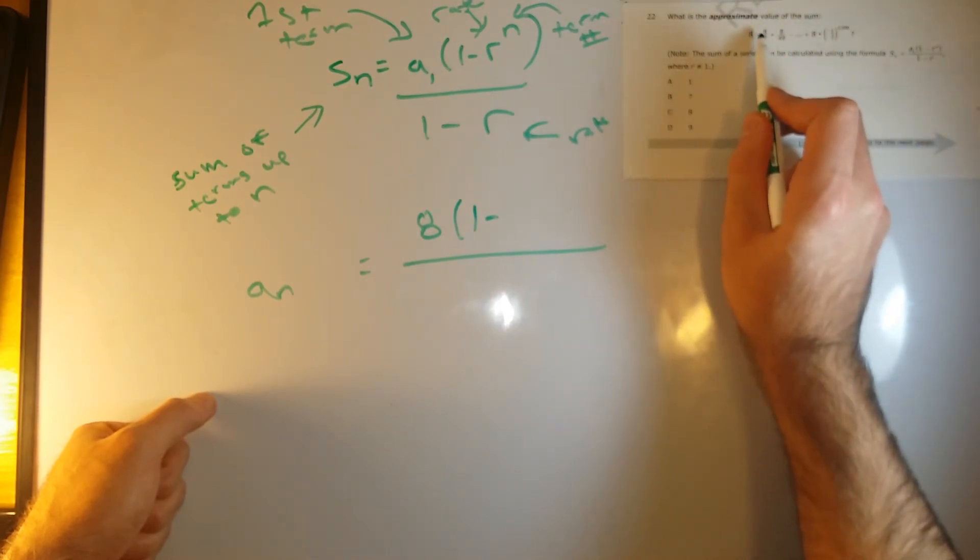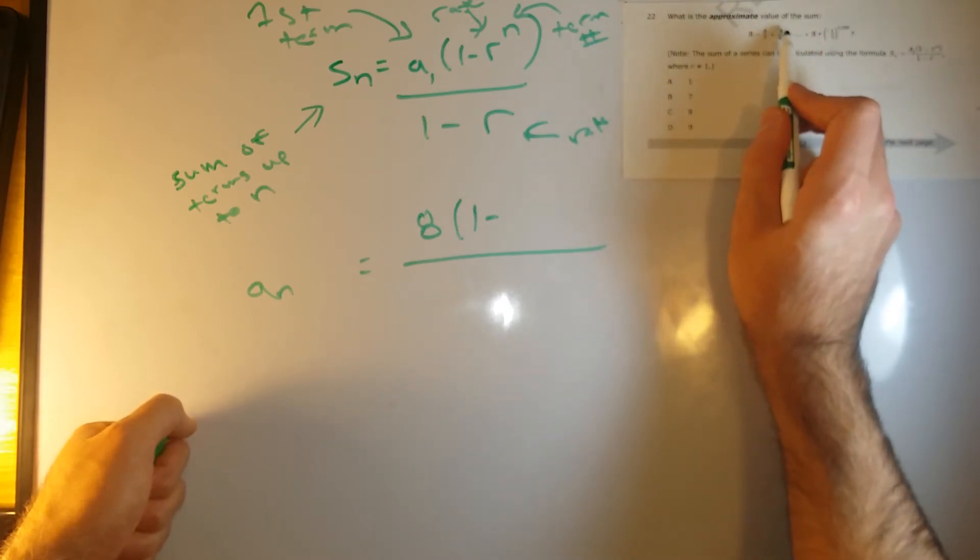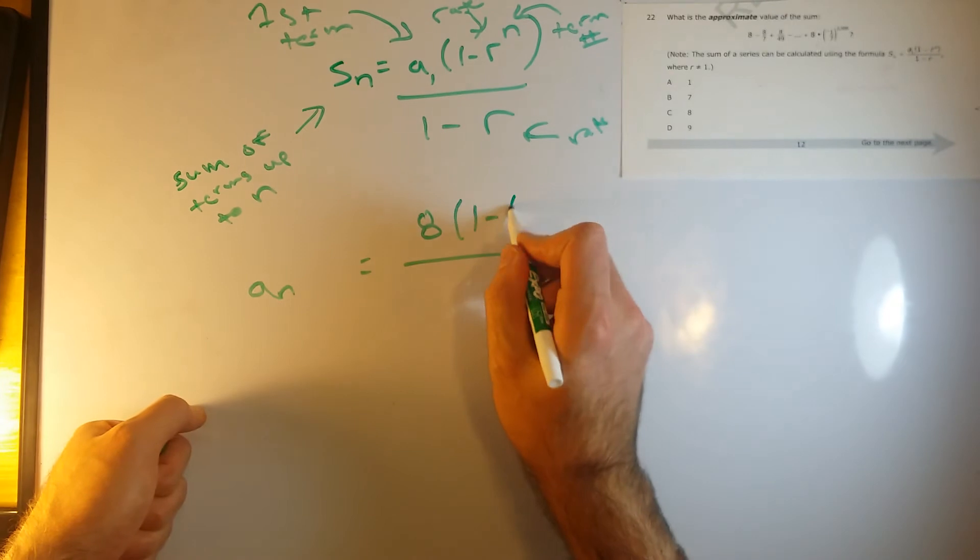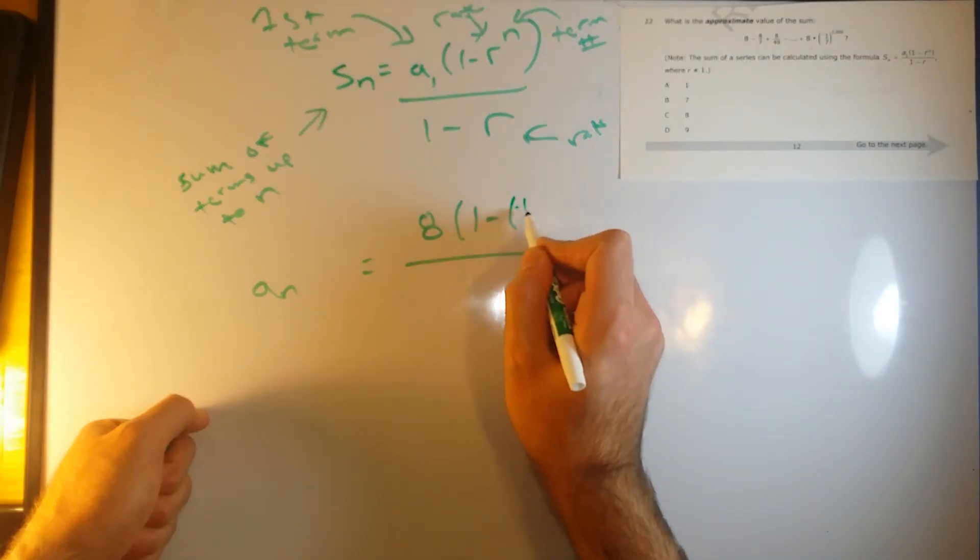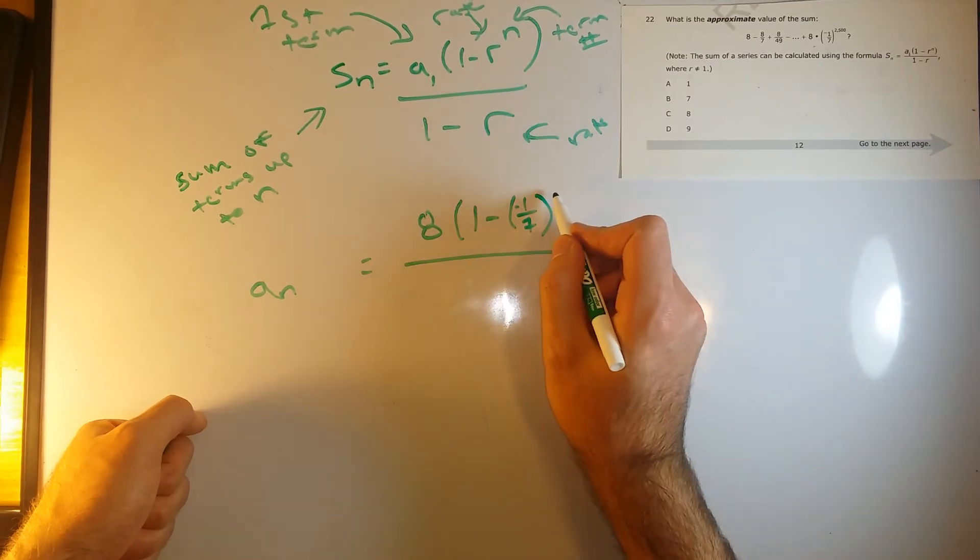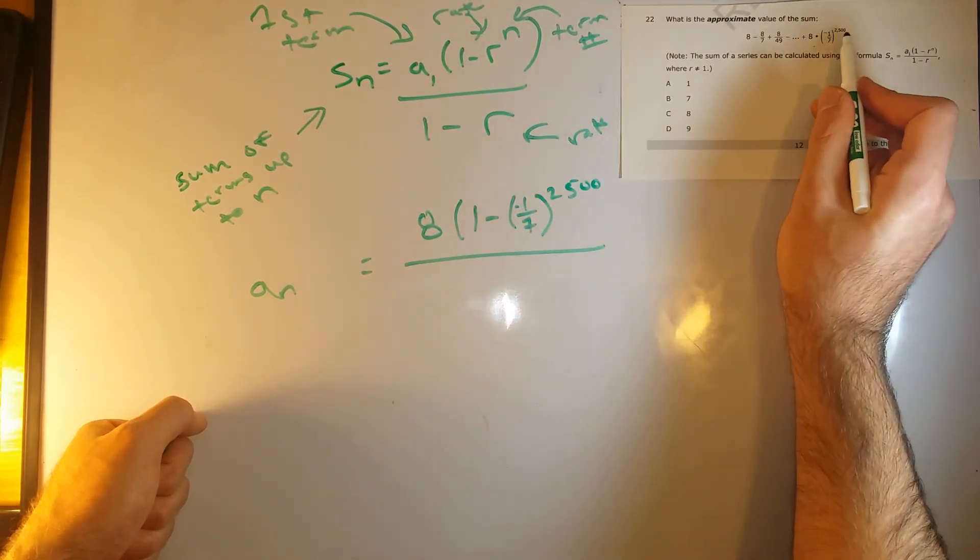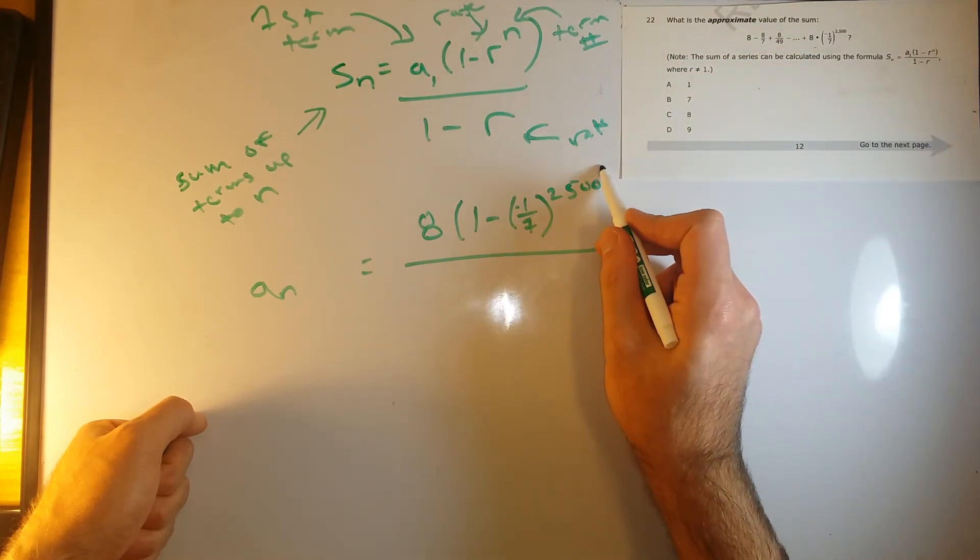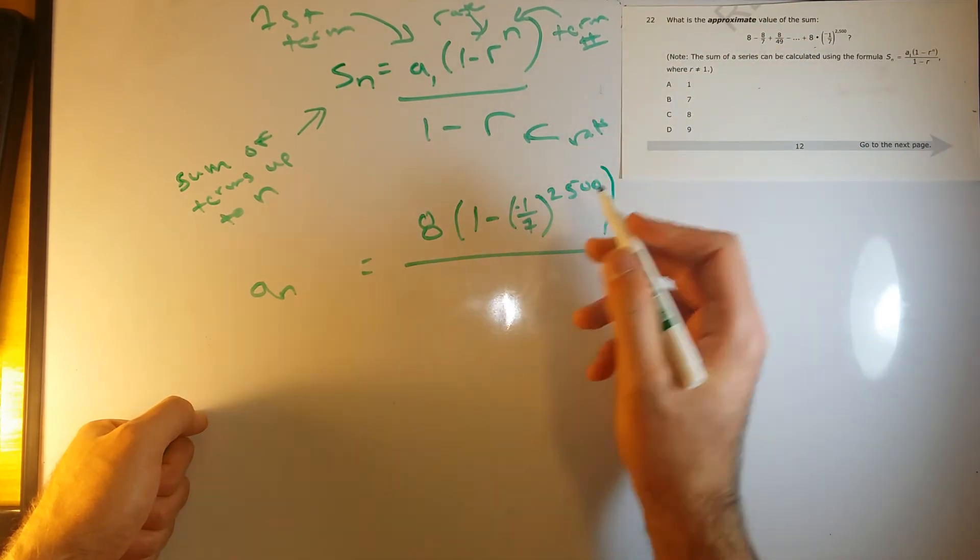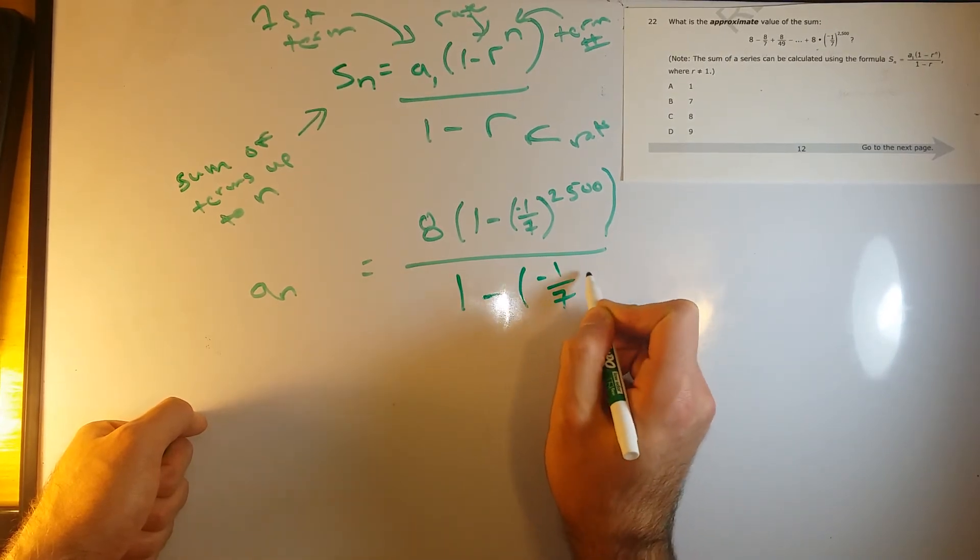See, 8 times negative 1 seventh gave us negative 8 over 7. Negative 8 over 7 times negative 1 seventh gives us positive 8 over 49. So right here, just minus negative 1 over 7 raised to the N. So the Nth term here is 2,500, all over 1 minus negative 1 seventh.